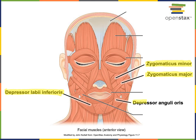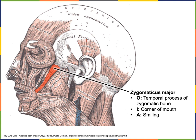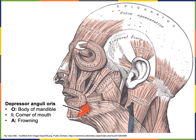Opposite to zygomaticus major is the depressor anguli oris. Its action is in the name — it depresses the angle of the mouth, commonly referred to as frowning. Zygomaticus major has its origin from the temporal process of the zygomatic bone and its insertion on the corner of the mouth to perform the action of smiling. Depressor anguli oris has its origin from the body of the mandible and its insertion into the corner of the mouth to perform the action of frowning.